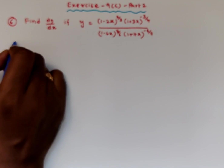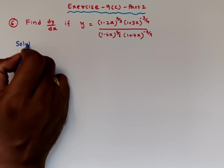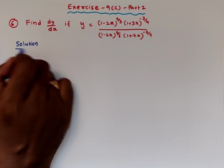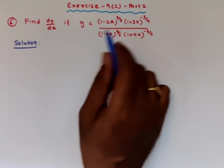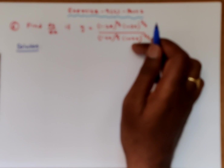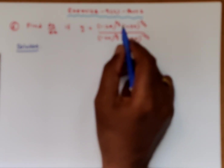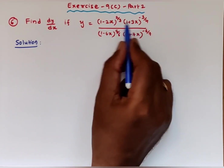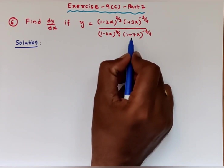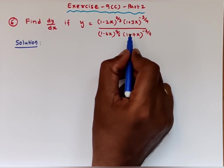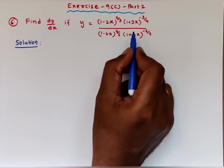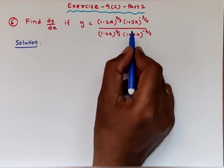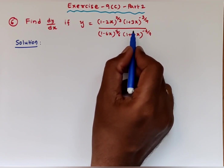How to find the derivative of this problem? This is in the form of u by v, so you need to apply the quotient rule. In the numerator it is a product, and in the denominator also a product. If you apply the derivative directly, the simplification may be very complicated. So if the simplification is complicated, better go with the logarithm differentiation method.